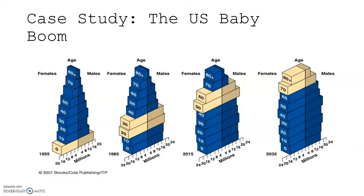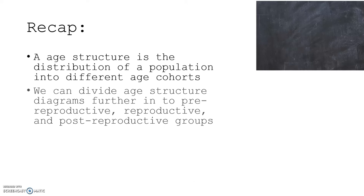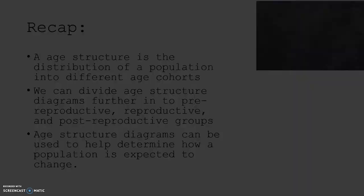To recap: age structure is the distribution of the population into different age cohorts. We can divide age structure diagrams further into pre-reproductive, reproductive, and post-reproductive groups. Age structure diagrams can be used to help determine how a population is expected to change.